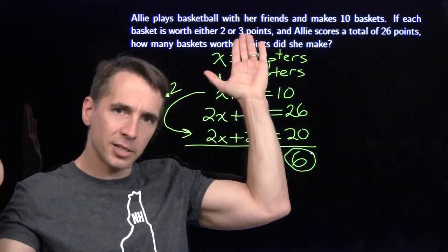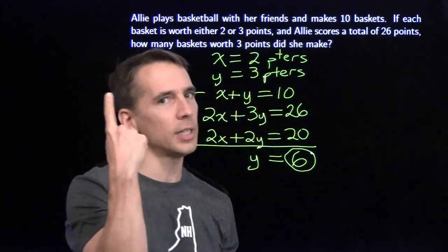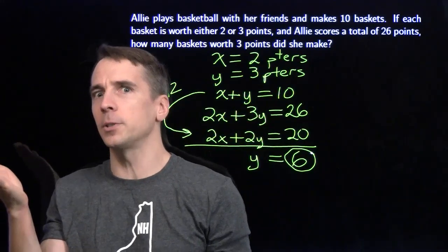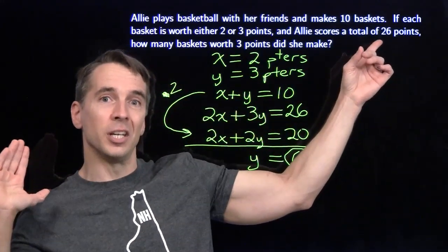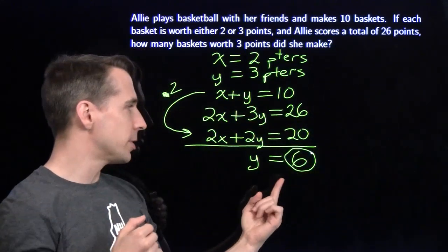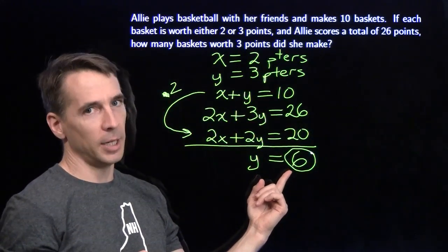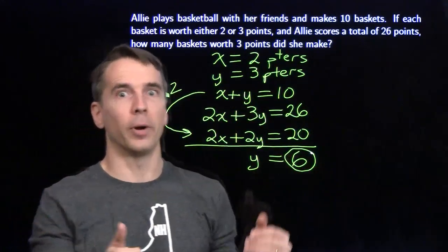The only thing she can do is switch some of these 2 pointers into 3 pointers. And each time she does that, she gets 1 more point. So if she had 20 points with just those 2 pointers, and she needs 6 more points, she has to switch 6 of those 2 pointers into 3 pointers. Same answer, 2 different ways. We know we're right.